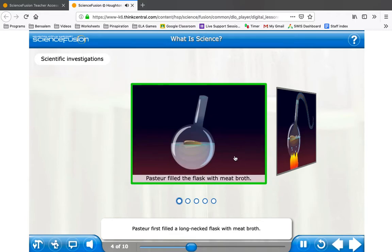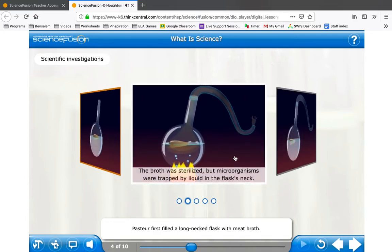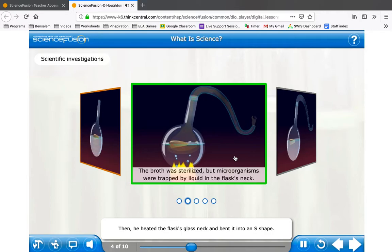Pasteur first filled a long-necked flask with meat broth. Then, he heated the flask's glass neck and bent it into an S-shape. Air could still reach the broth, but liquid in the S-shaped neck trapped airborne microorganisms.